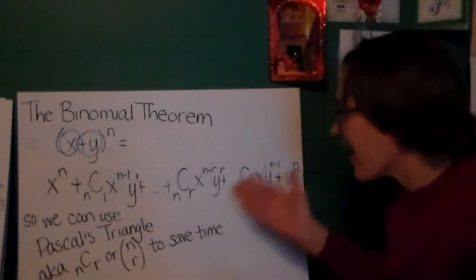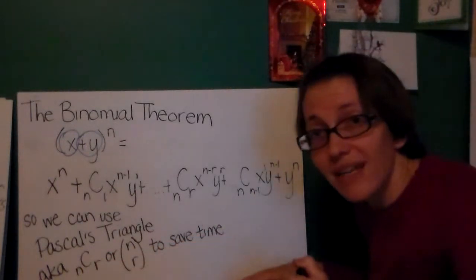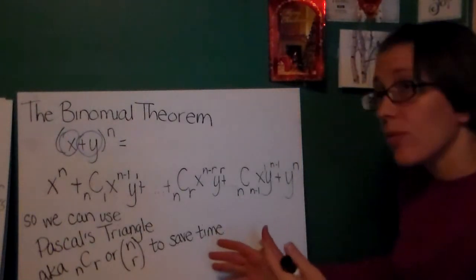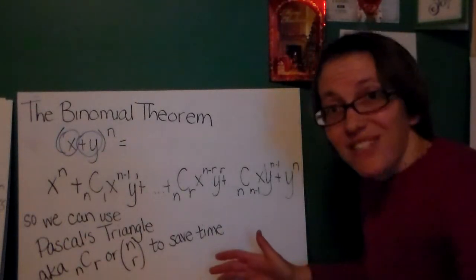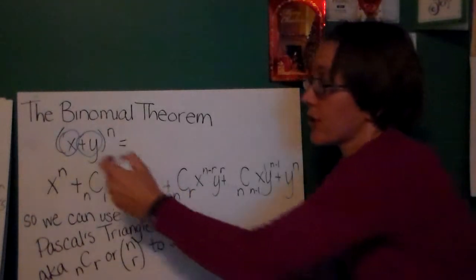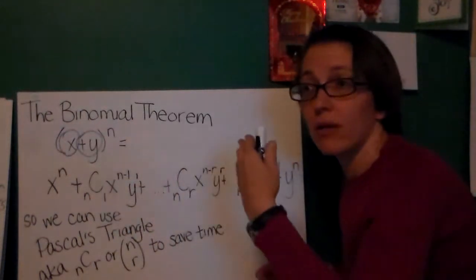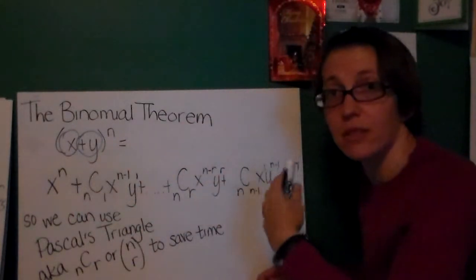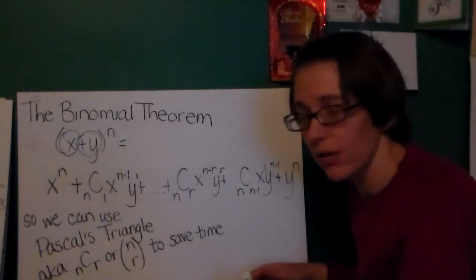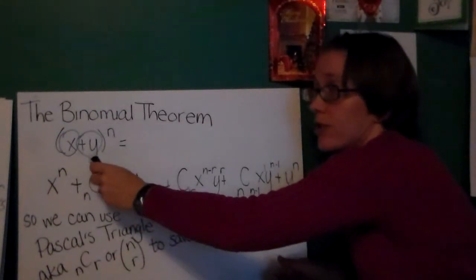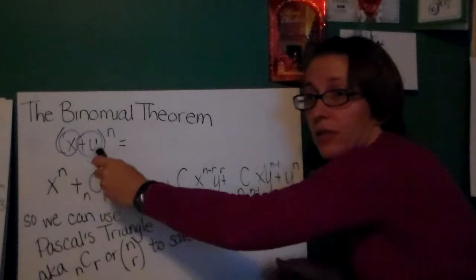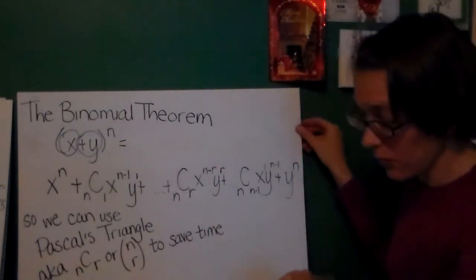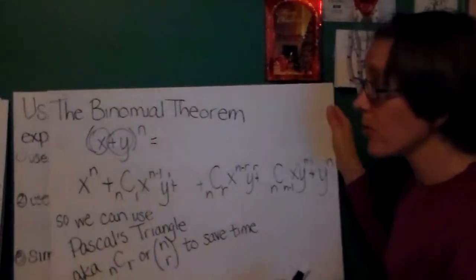So again, how is this helpful? Well, it says we can use Pascal's triangle to save time, and then we can figure out the other parts of our terms by just raising the first thing to first this exponent, and then one less than that, and then one less than that, one less than that, etc., all the way down. And raising this first to the 0 power, then to the 1st, then to the 2nd, then to the 3rd, all the way up to n. It makes it a lot easier. We're going to look at one example of this, and we'll look at a couple more in class.